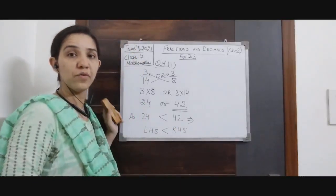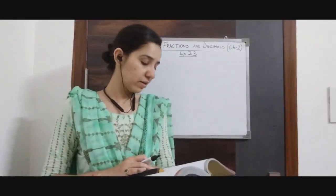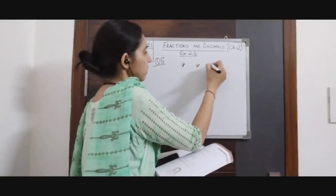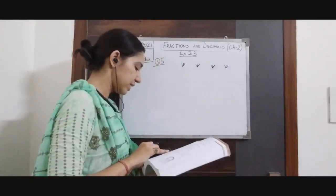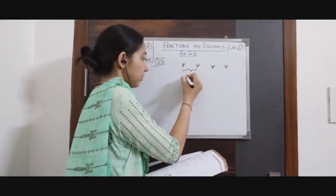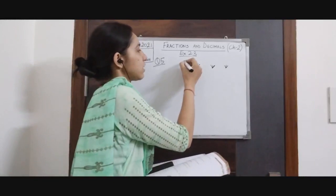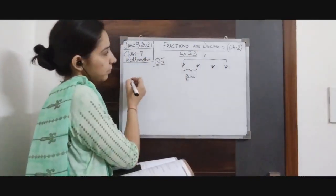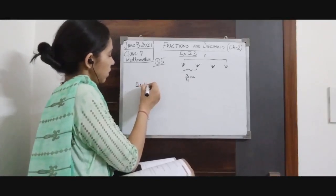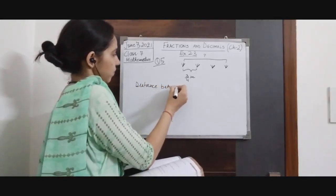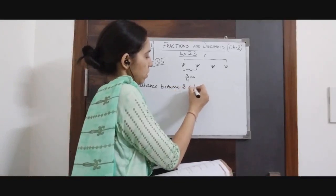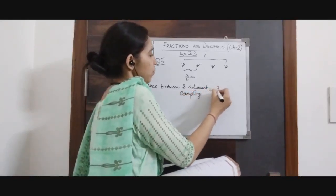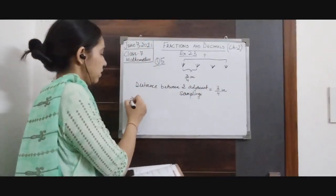Now we will move on to question number 5. Question number 5 says: Sally plants 4 saplings in a row in her garden. The distance between 2 adjacent saplings is 3/4 metre. Find the distance between the first and last sapling. Distance between two adjacent saplings is 3/4 metre.